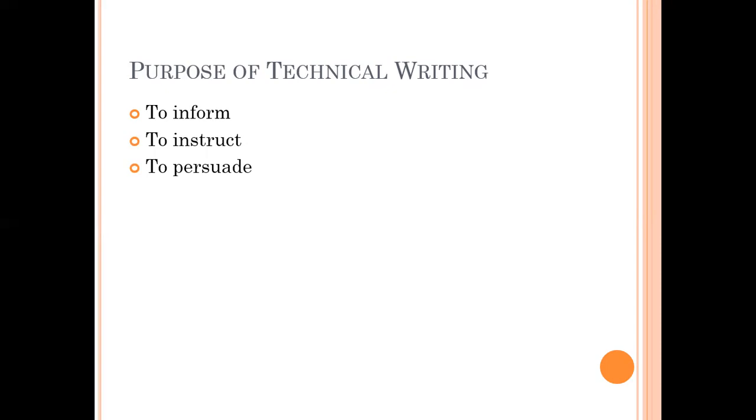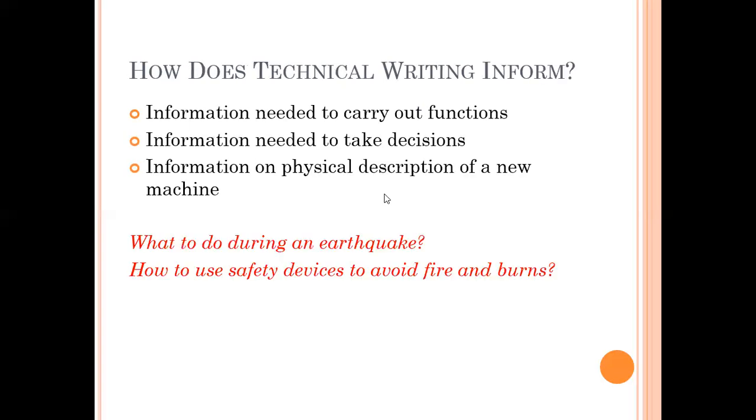How does technical writing inform? It provides information needed to carry out functions, information needed to take decisions, information on physical description of a new machine, what to do during an earthquake, or how to use safety devices to avoid fire and burns. These are examples through which technical writing informs.